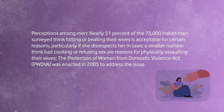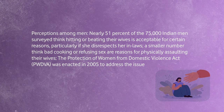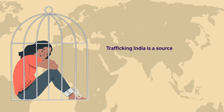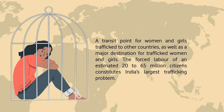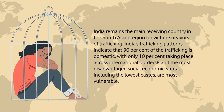The Protection of Women from Domestic Violence Act (PWDVA) was enacted in 2005 to address these issues. Trafficking is also very important to understand. India is both a transit point and a major destination for trafficked women and girls. Forced labour is estimated to affect 20 to 65 million citizens, constituting India's largest trafficking problem. India remains the main receiving country in the South Asian region for victims of trafficking.